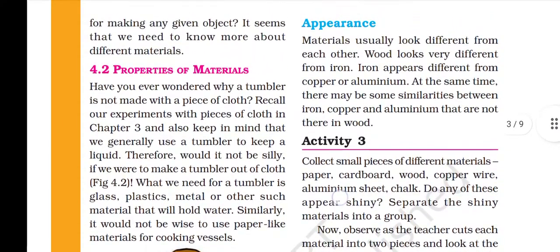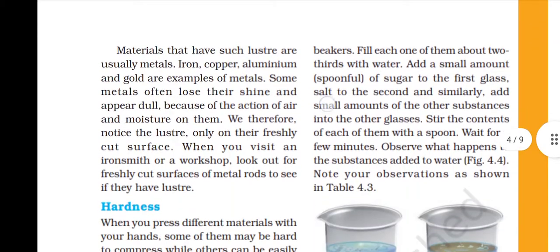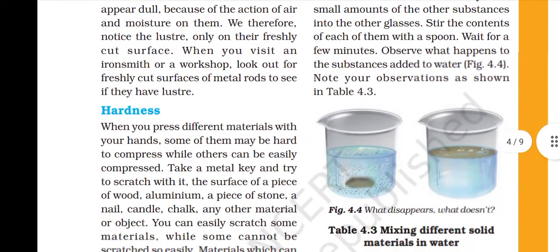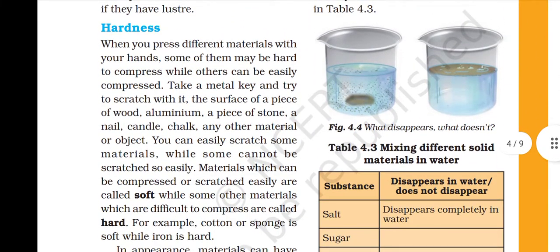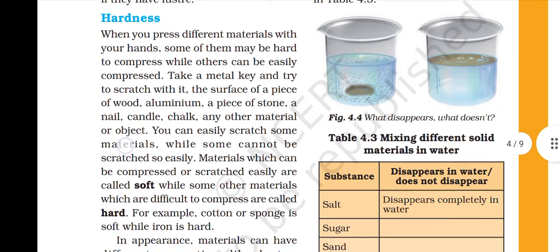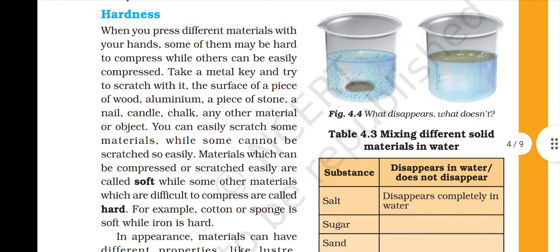We have seen the appearance of materials. The second property is hardness. What is hardness? When you press different materials with your hand, some of them may be hard to compress while others can be easily compressed. If we try to compress a hard material, it will not be compressed, but there are many materials that will be easily compressed.